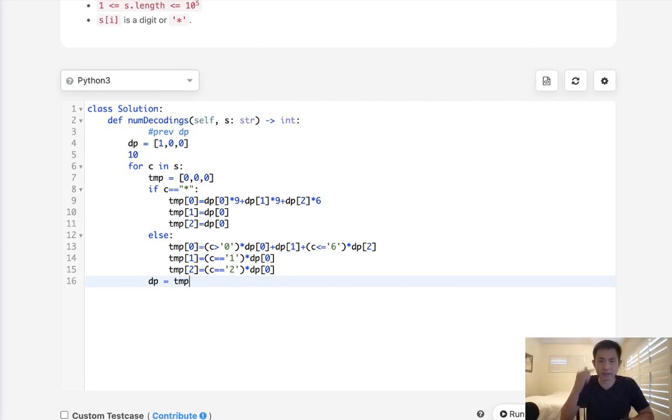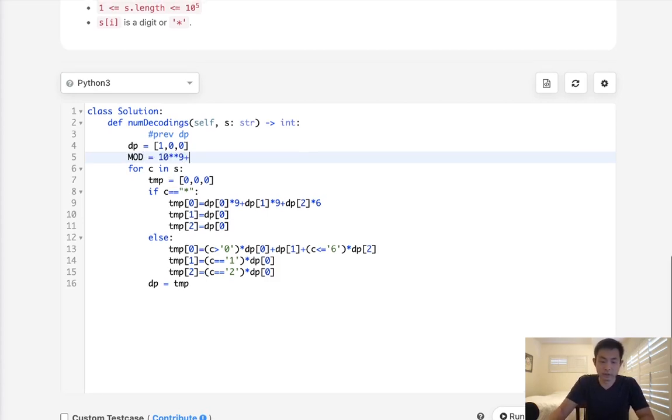Make sure to now make DP equal to temp. And I think in order to get this to pass, we have to do a modular here. So we can say mod for I in temp. So that's going to be our new DP. Finally, once we get out of here, we just return our DP and the first value.